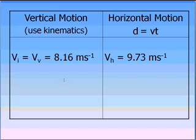Putting in what I know so far, I have worked out the initial vertical velocity. That is going in as 8.16 ms on the vertical side, and on the right hand side, I have got my horizontal velocity, which is 9.73 ms.